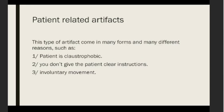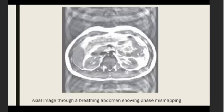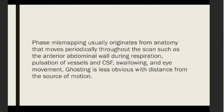Patient-related artifacts occur when a patient is claustrophobic, when you don't give the patient clear instructions, or due to involuntary movement. The first artifact is the phase mismapping artifact — also called phase encoding artifact or ghosting artifact. This artifact produces replications of moving anatomy across the image in the phase encoding axis. Here is an axial image through the abdomen during breathing, showing phase mismapping.